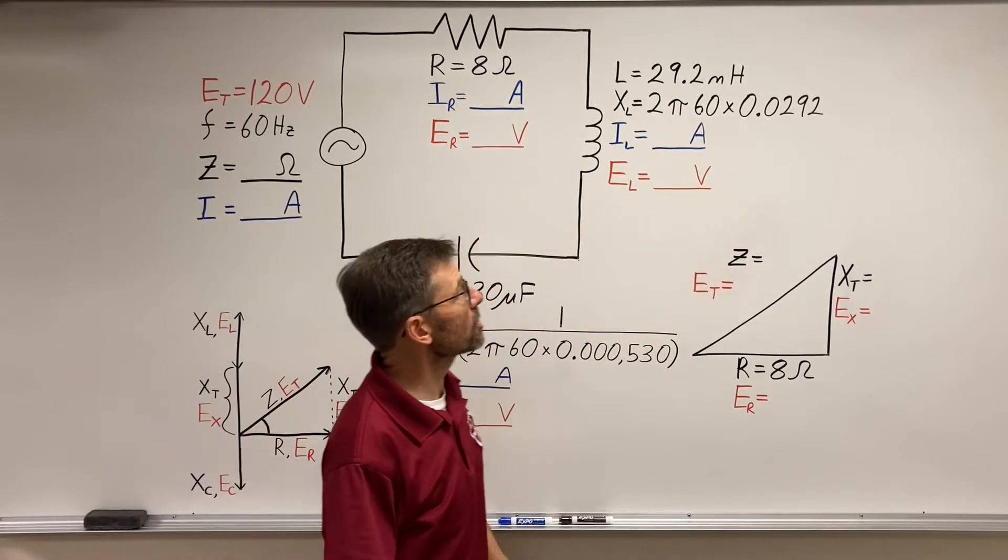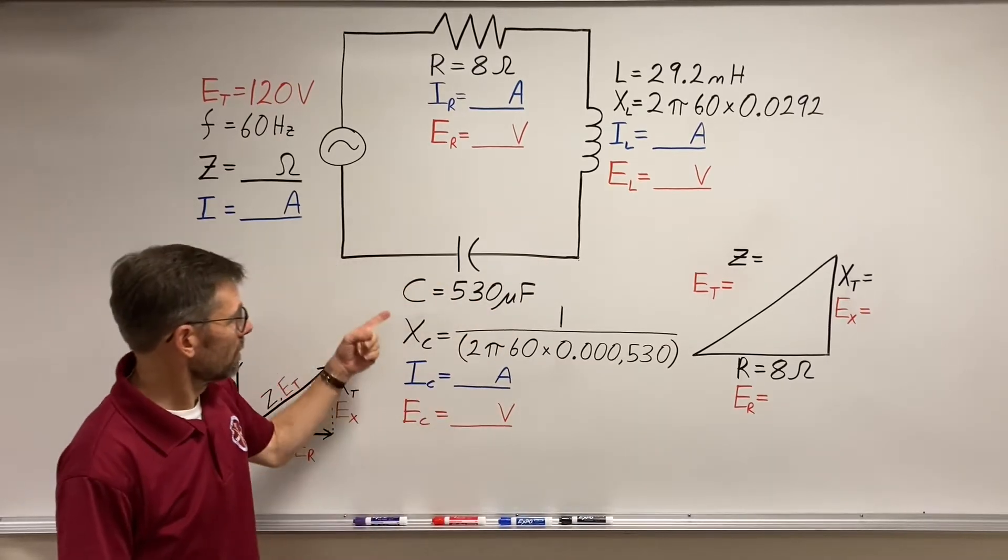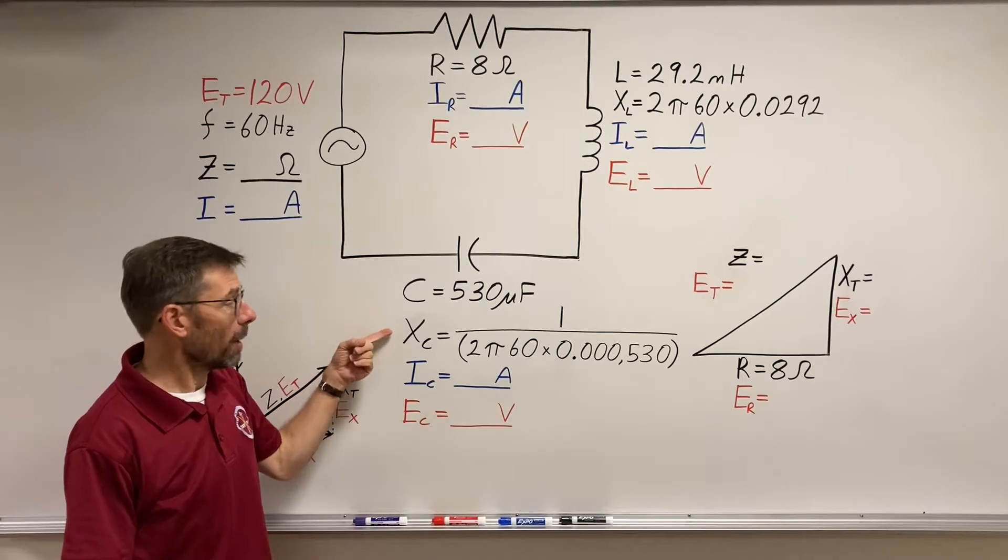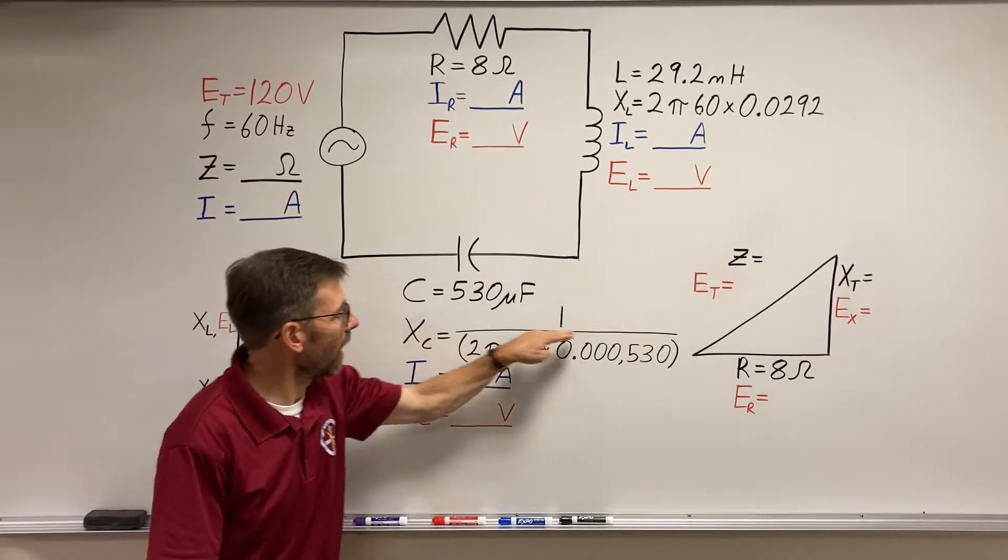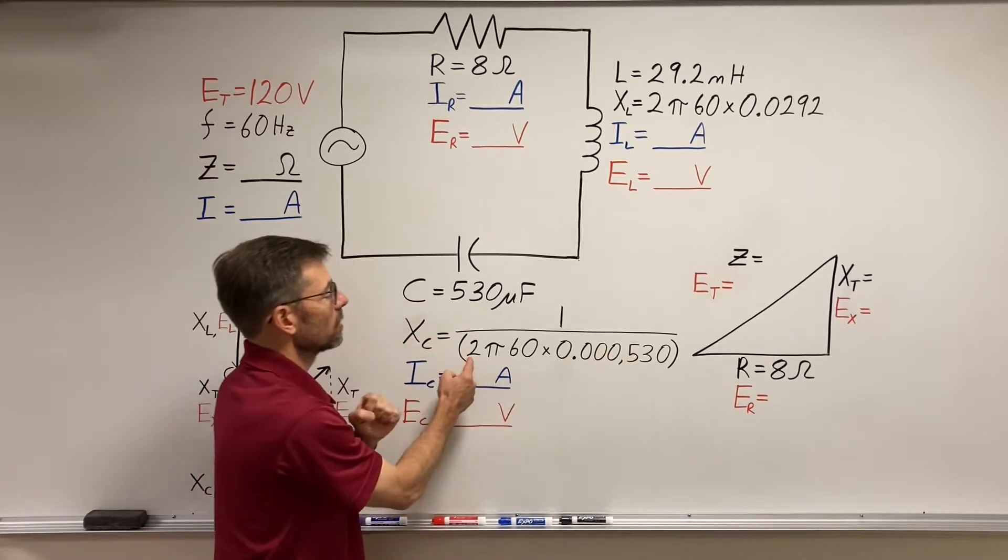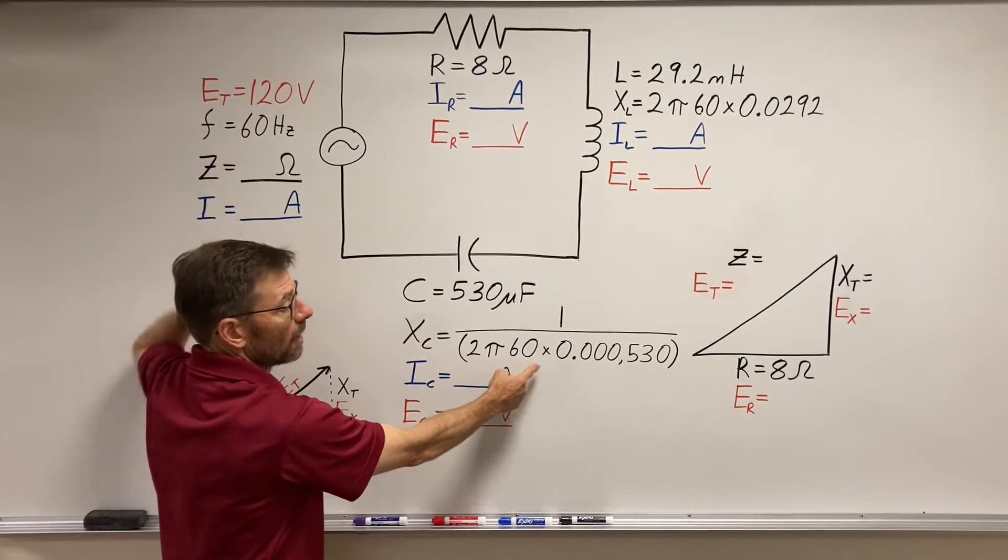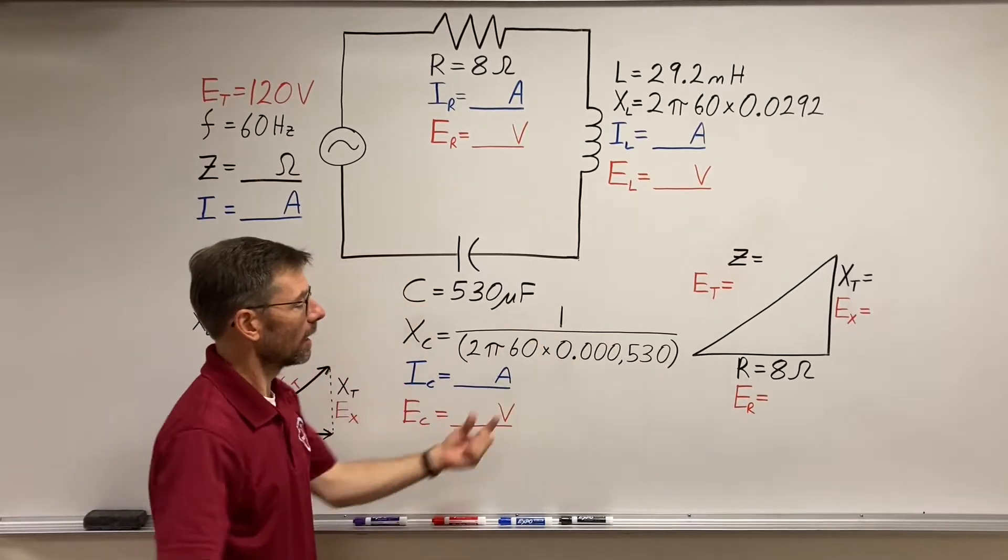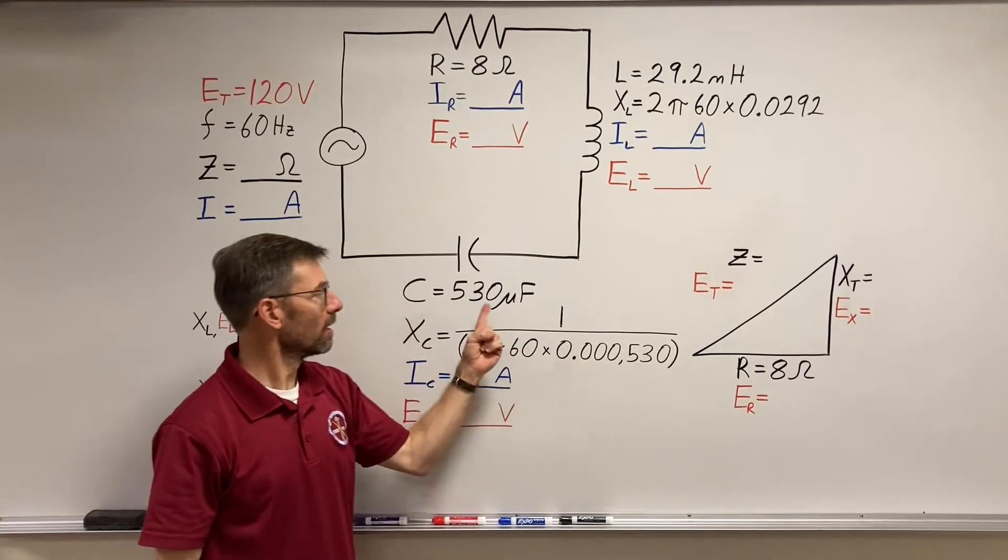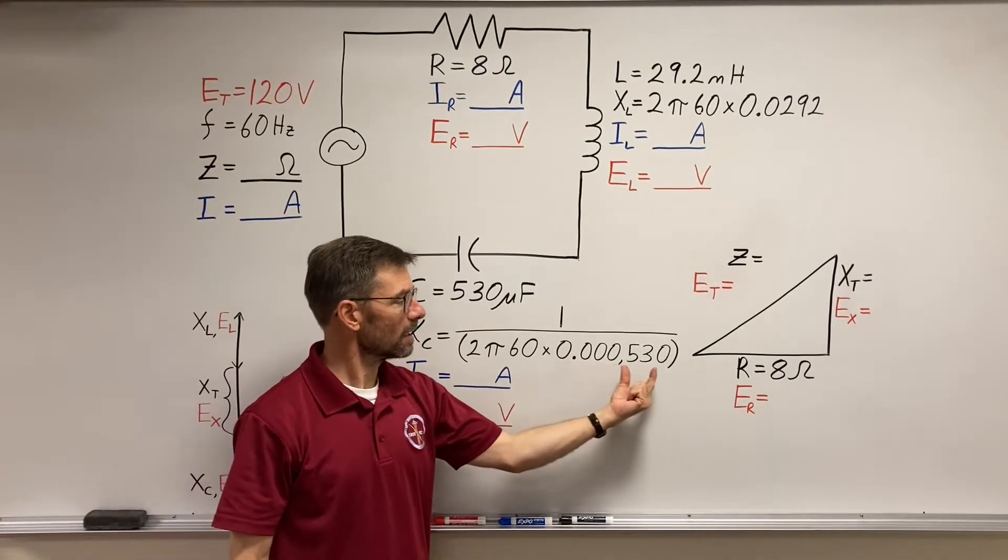Okay, multiply those together and we'll get our ohmic value for the inductor. Down here on the capacitor, how much opposition does it provide? Well, one divided by the quantity two times pi times frequency, 60 hertz, times the capacitance in farads. Again, I wrote it all out so we can see it, 530 microfarads. These are millis, then micros.